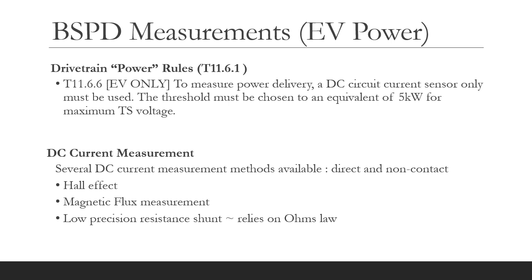So let's remind ourselves what the rules say about BSPD measurements. We must measure the power, or the equivalent of 5 kilowatts, using a DC current sensor, measuring between the accumulator and the inverter or motor controller. Several methods are available to measure current, including Hall effect, magnetic flux measurements, and low-precision shunts relying on Ohm's law. These measurements can either be direct or non-contact — a sensor in proximity to the conductor, or perhaps a toroidal arrangement wrapping around the conductor.